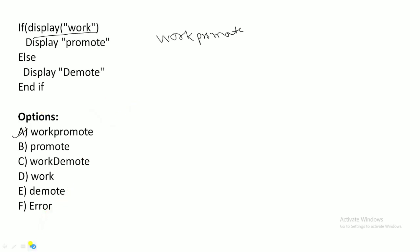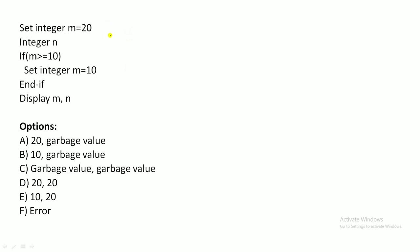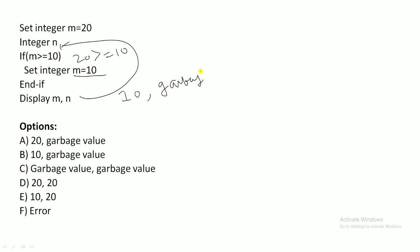The next question: integer m = 20, integer n (uninitialized). If m >= 10: 20 >= 10 is true, so control enters the if block. m is reassigned to 10. Display m and n. m is now 10, but n was never assigned a value, so it will print a garbage value. The output is '10, garbage value'.